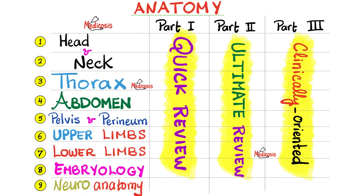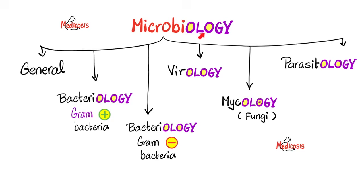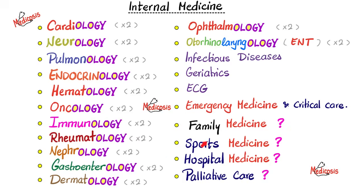For example, I have a quick review of the thorax, an ultimate review of the thorax, and a clinically oriented anatomy of the thorax — and I repeated the same process for every branch in anatomy, including neuroanatomy and embryology. I also have review videos for physiology, biochemistry, molecular biology, genetics, pharmacology, and pathology. I cannot forget microbiology: there are reviews for general micro, gram positives, gram negatives, viruses, fungi, and human parasites. And for internal medicine — cardiology is reviewed in two videos, neuro two videos, and also pulmonology, endocrinology, hematology, oncology, immunology, rheumatology, and nephrology.